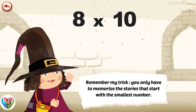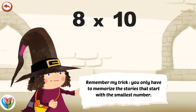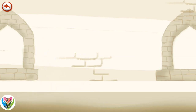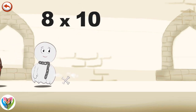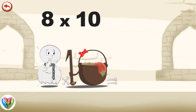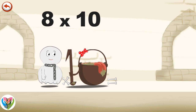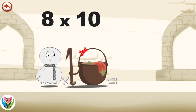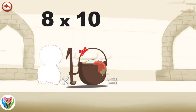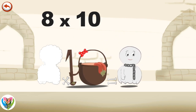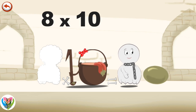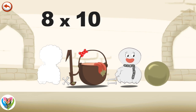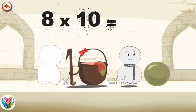Remember my trick. You only have to memorise the stories that start with the smallest number. What's the story of 8 times 10? When Spooky 8 meets the potion Magi 10, it makes him very, very hungry. He dives headfirst into the cauldron and comes out feeling very full. He gives an enormous magic burp and blows a bubble in the shape of a zero. 8 times 10 is 80.